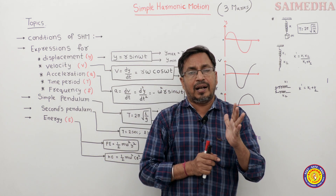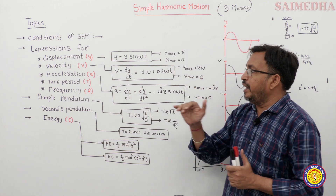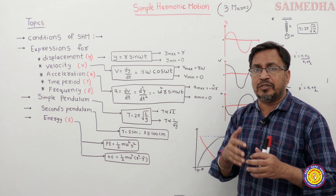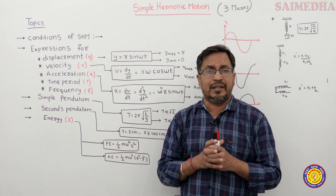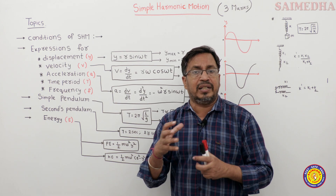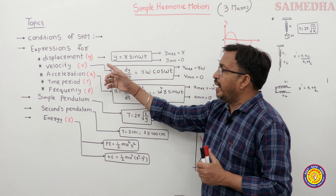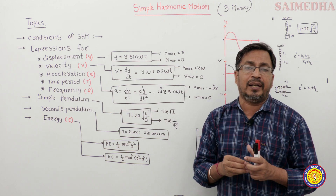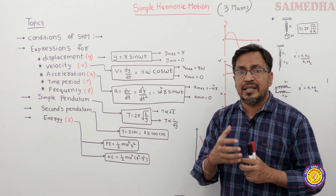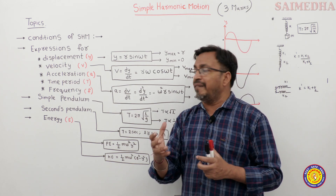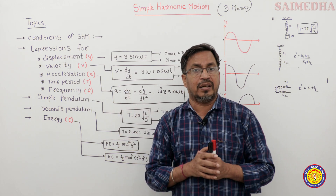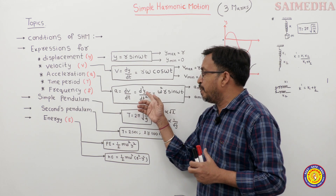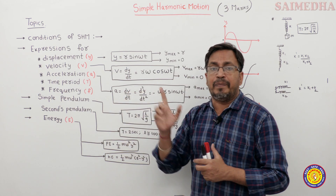Let us start with the first equation. We are in the third unit of kinematics and mechanics. What is the relation between displacement, velocity, and acceleration? Displacement is y, velocity is v. The derivative of displacement with respect to time gives velocity. The derivative of velocity is known as acceleration. So by double differentiation, acceleration equals d²y/dt².